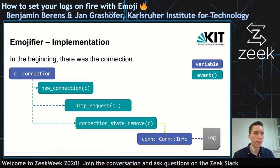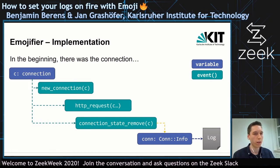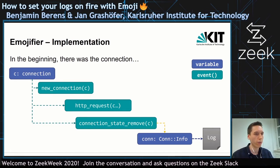All these events can access the connection information. Finally, in the connection state remove event, we have another variable field of type coninfo, which represents the actual log line that is written. Data from the connection is merged together into that connection info record and written to the log file.